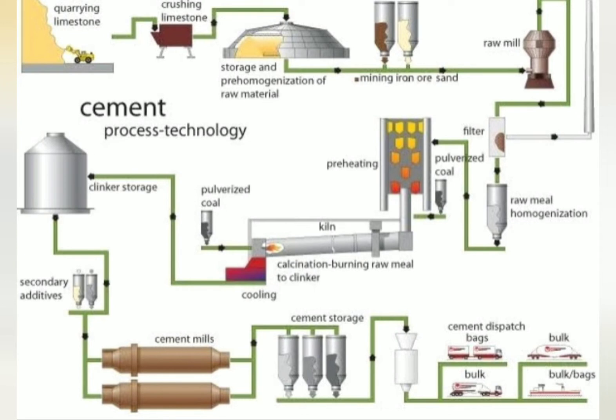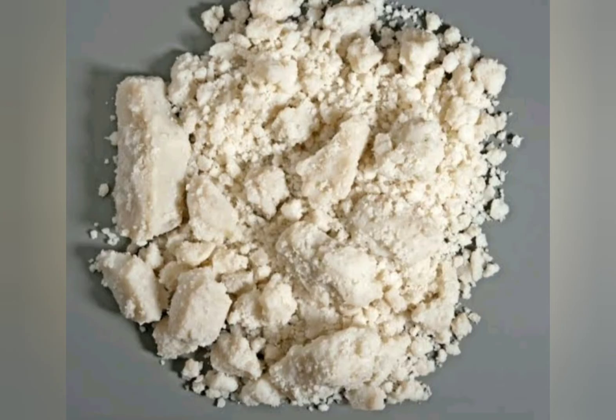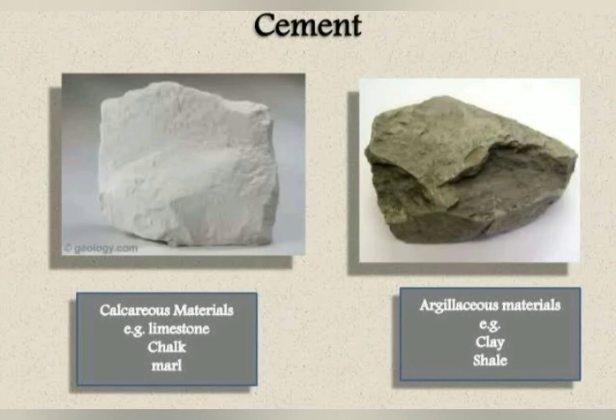What ingredients are you going to use? The main item is argillaceous materials. The other one is calcareous materials. The calcareous materials are a mixed material — a silicone container. The argillaceous materials contain aluminium and lime. This is cement.